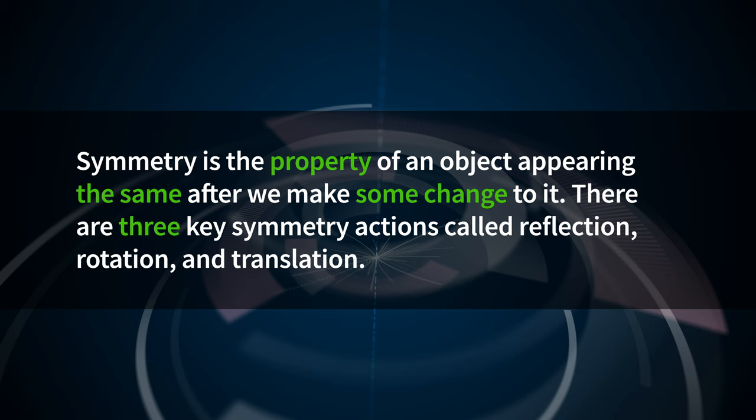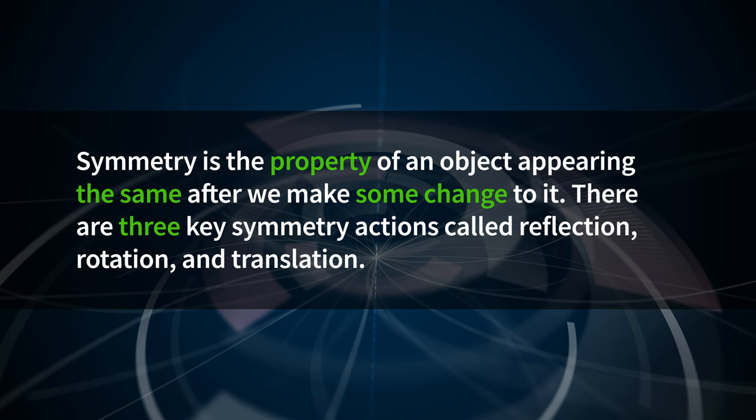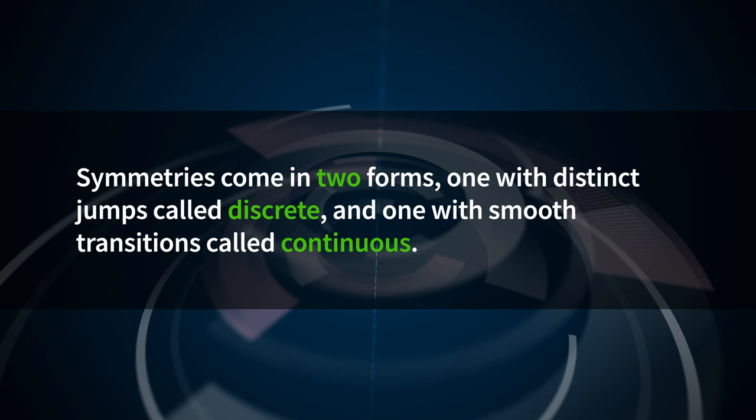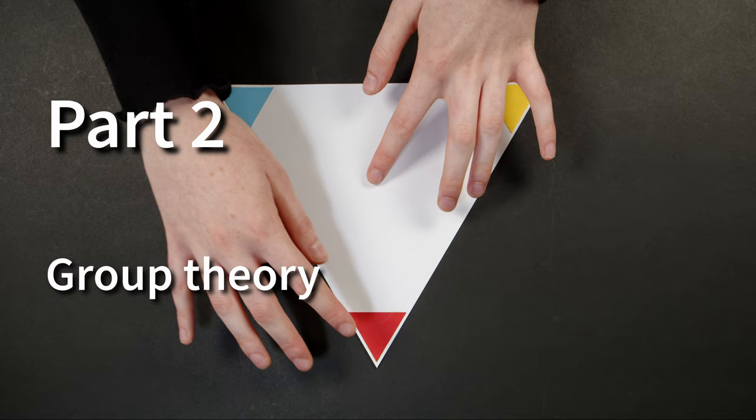So now, we are able to talk about symmetries in a meaningful and precise way, and as physicists, that helps save us a whole lot of work. Instead of painstakingly tackling complicated systems, we can study some small part of them, and by symmetry, assume the rest works the same. We now know that symmetry is the property of an object appearing the same after we make some change to it, and that there are three key symmetry actions — reflection, rotation and translation — and that symmetries come in two forms: discrete, with distinct jumps, and continuous, with smooth transitions.